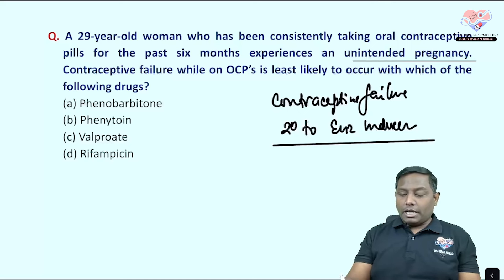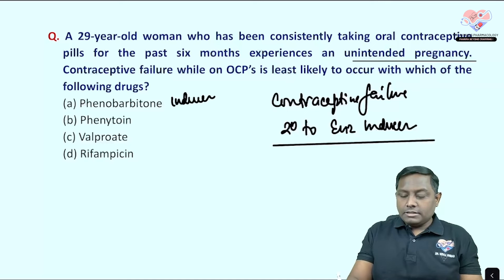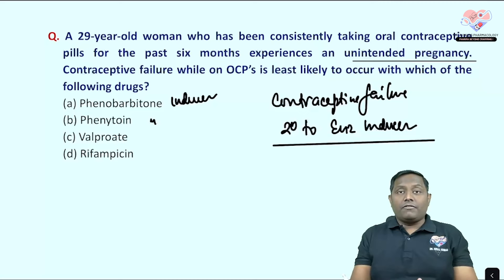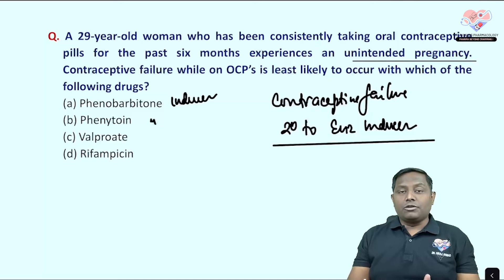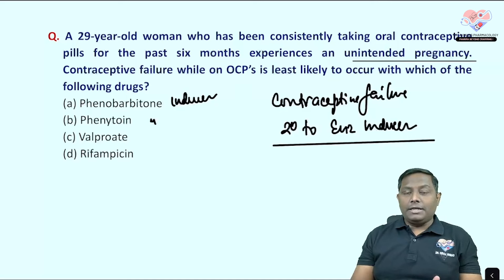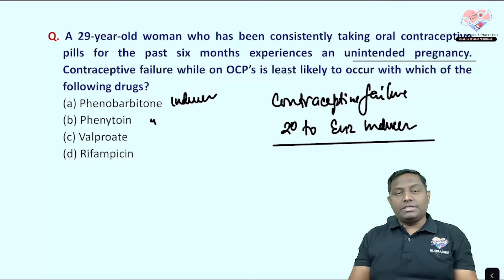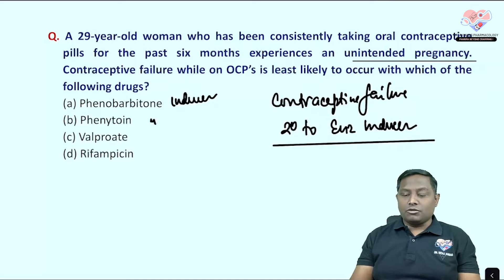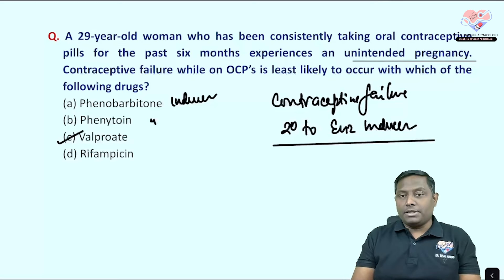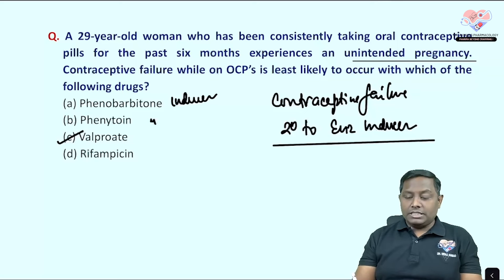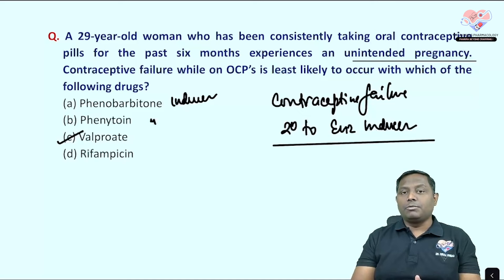Barbiturates and phenytoin are enzyme inducers. Valproate, however, is an enzyme inhibitor — the mnemonic for enzyme inhibitors includes valproate, erythromycin, clarithromycin, ciprofloxacin, omeprazole, cimetidine, ketoconazole. Rifampicin is a very important enzyme inducer.